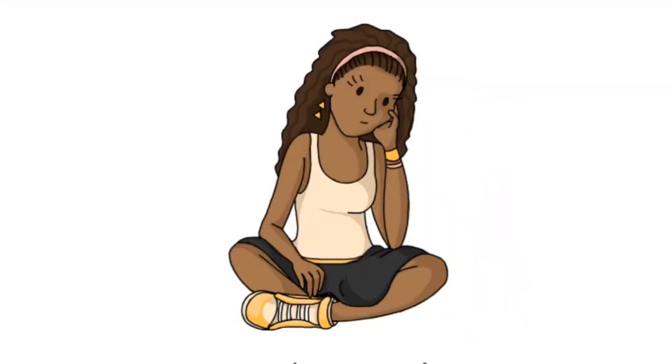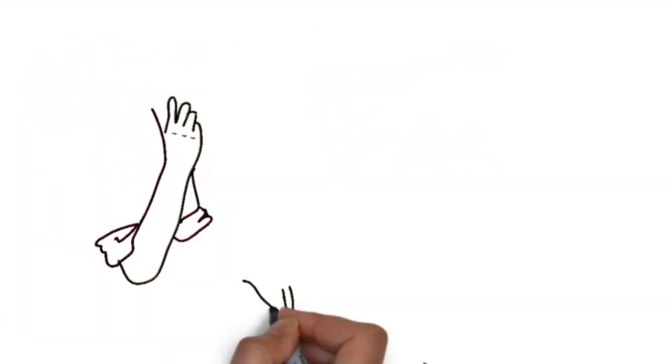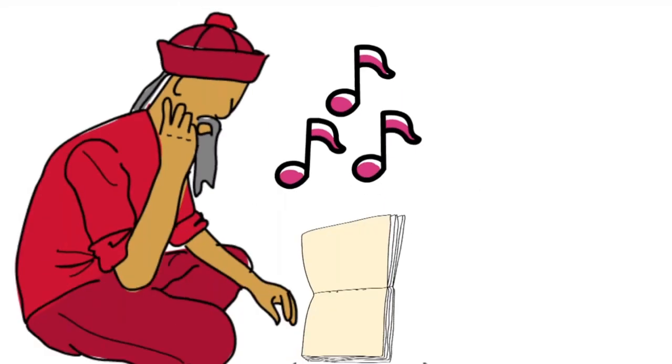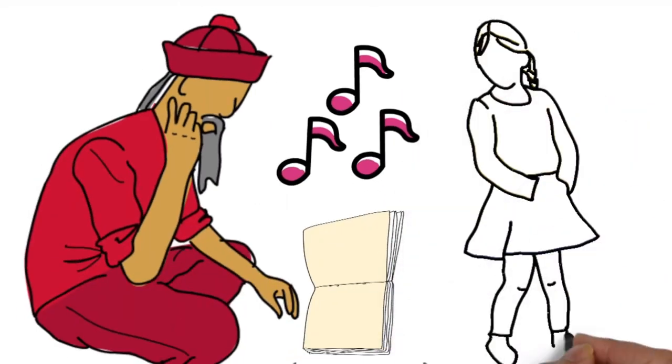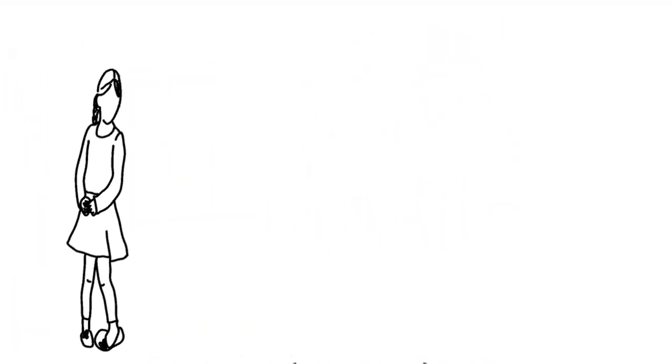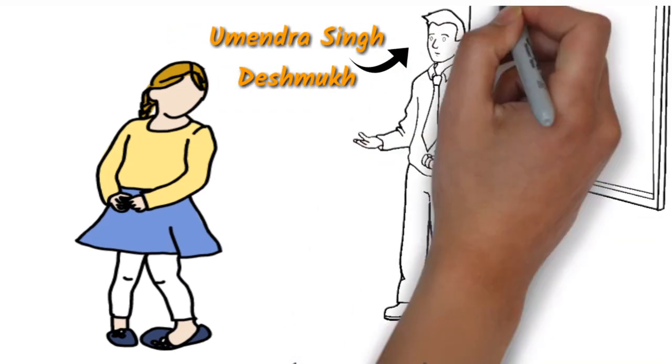Bhima is the hero of the story. Pandwani has two styles: Vedmatri and Kapalik. Teejan Bai's grandfather, Brijlal Pradhi, was also a well-known Pandwani singer. As a child, Teejan Bai was very interested in watching and listening to Pandwani songs.